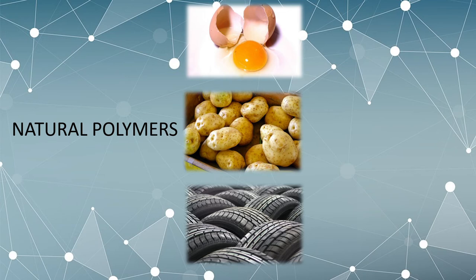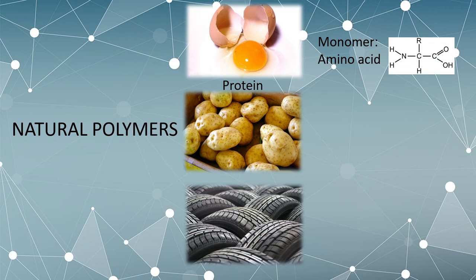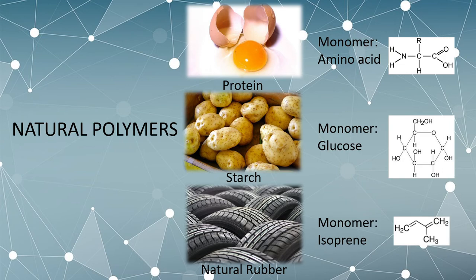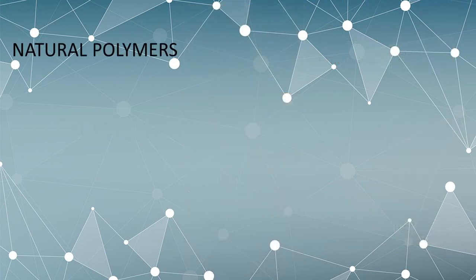Proteins in eggs are polymers with amino acid monomers. Meanwhile, starch is the polymer that makes up potatoes, with glucose acting as its monomer. Natural rubbers are made up of monomers called isoprene.